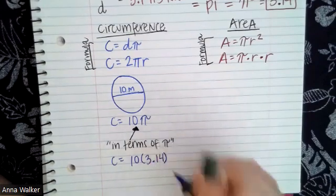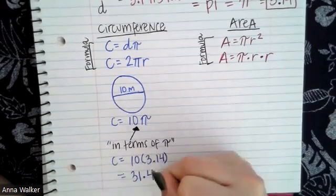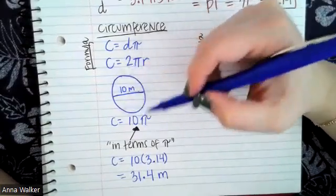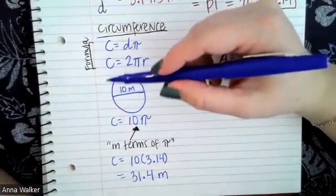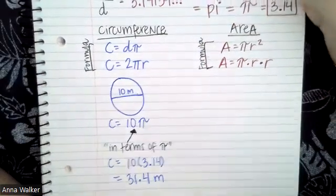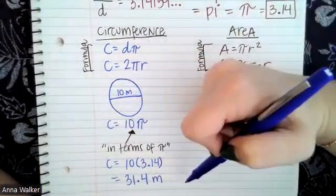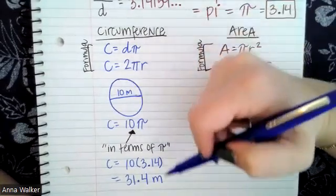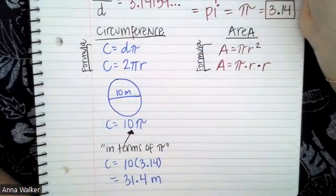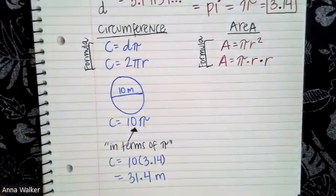If we did not leave it in terms of pi, we would replace pi with 3.14: 10 × 3.14 = 31.4 meters. The perimeter is a one-dimensional distance. Think of it like having a circular pool and needing to put a fence around it — you would need 31.4 meters of fencing. That is how we find the circumference of a circle.